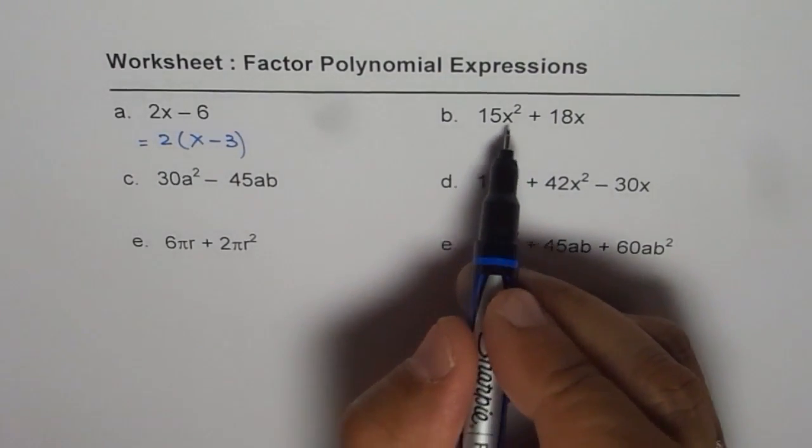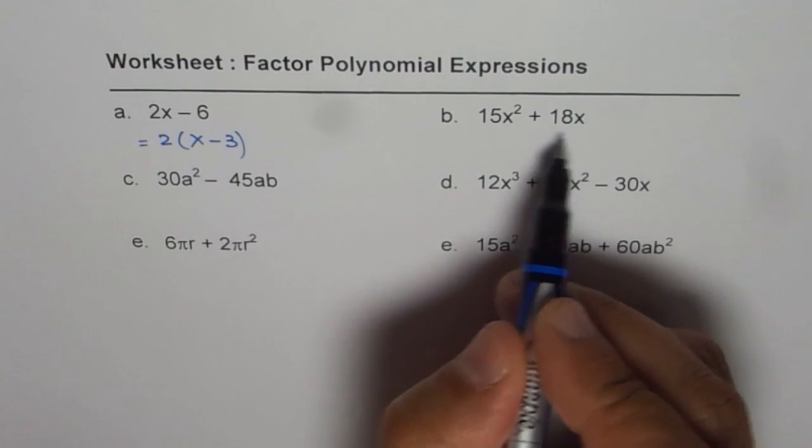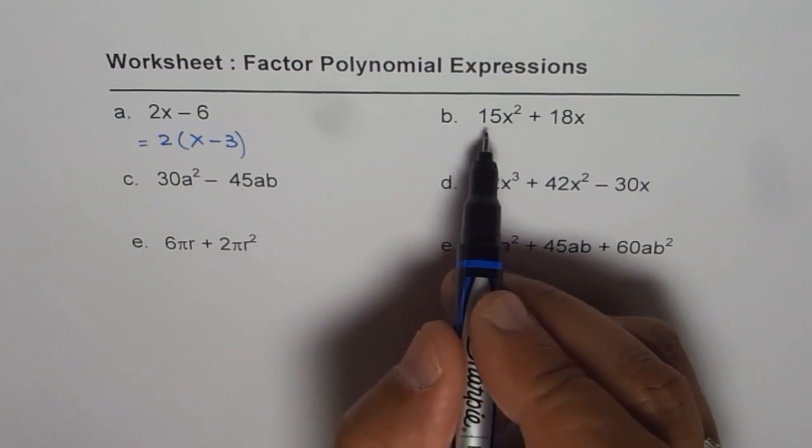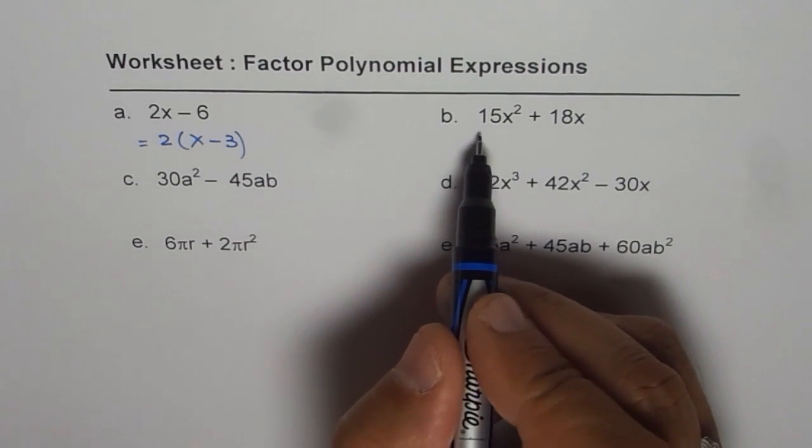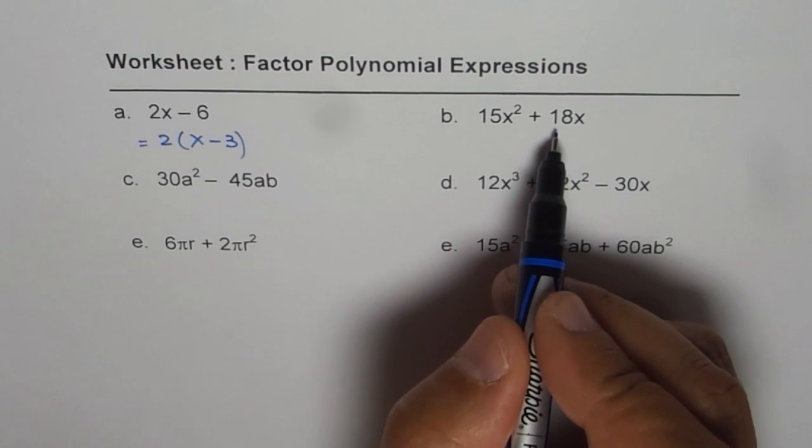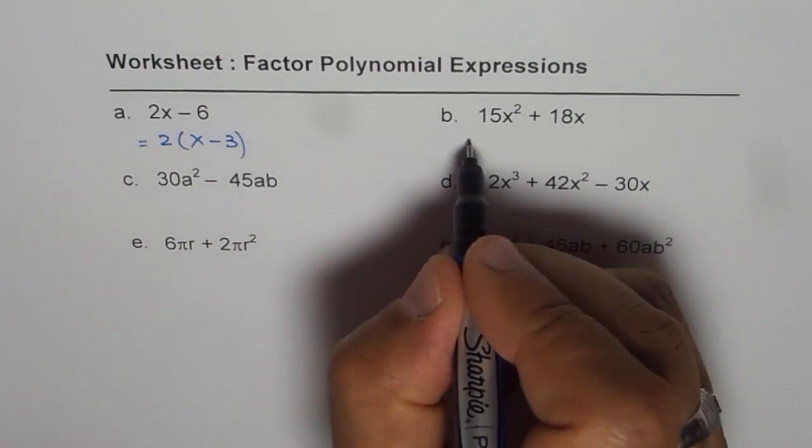The next one is 15x squared plus 18x. x is a common factor, and for the numbers 15 and 18: 15 is 3 times 5, 18 is 3 times 6, so 3 is a common factor.